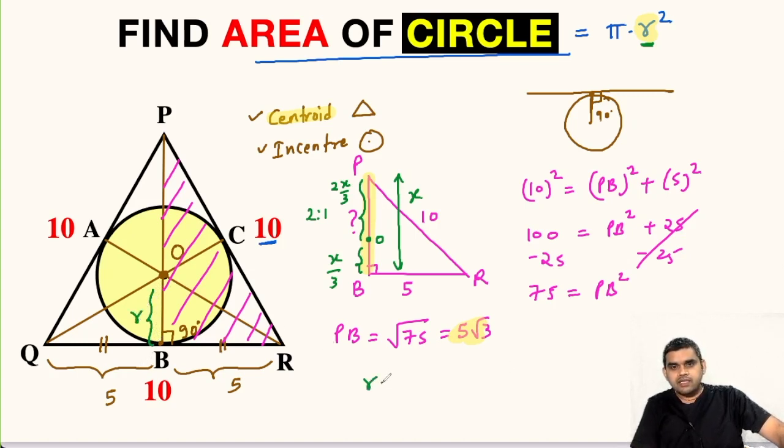So r will be equal to the entire length X here which is equivalent to 5 root 3. So 5 root 3 divided by 3, that means one third of this entire length. So we have found the radius of this incircle.